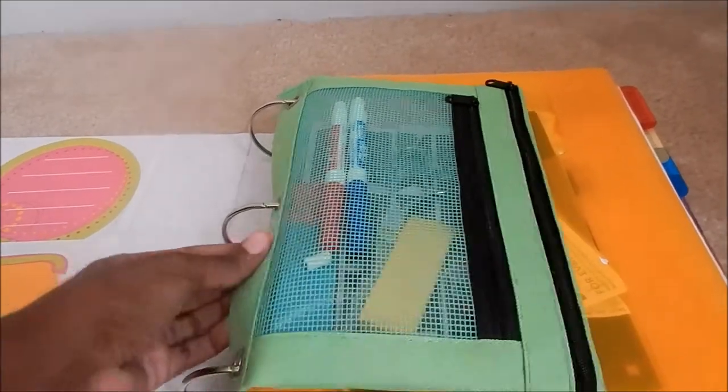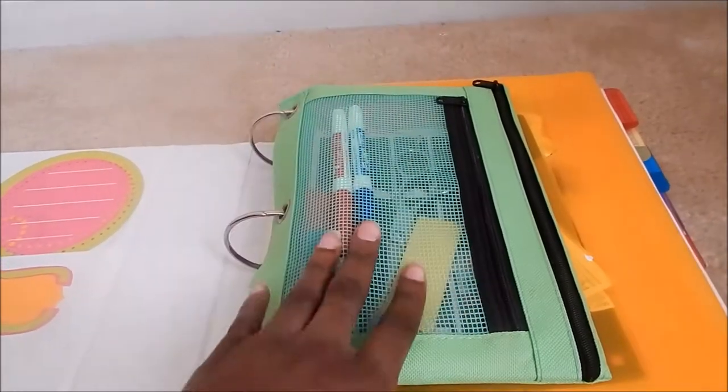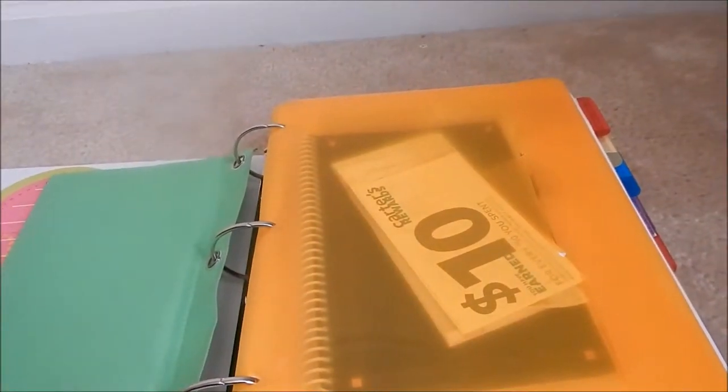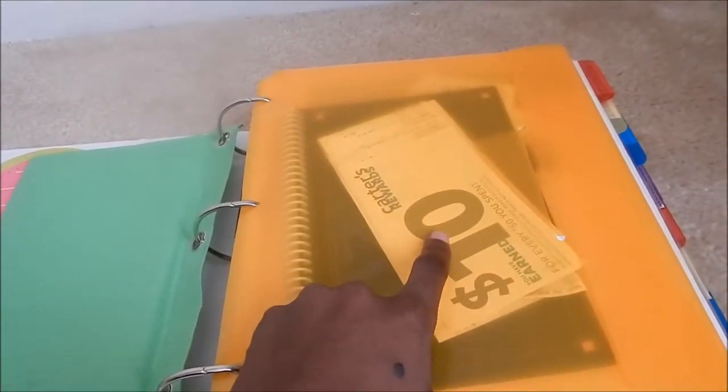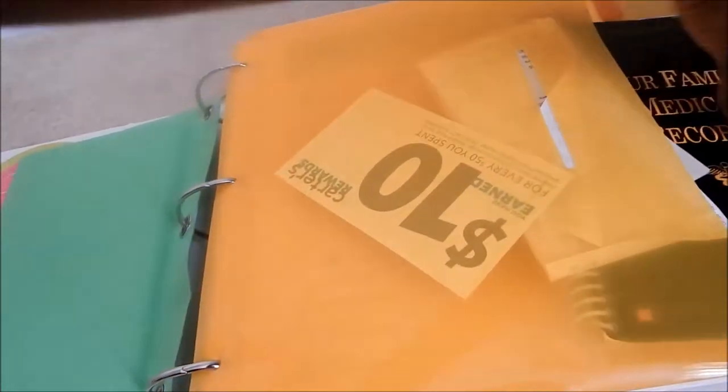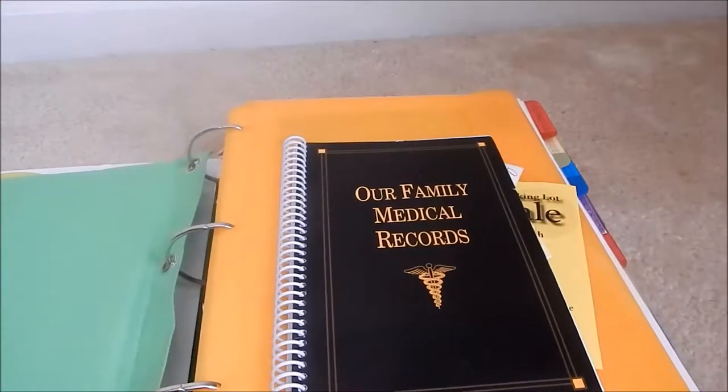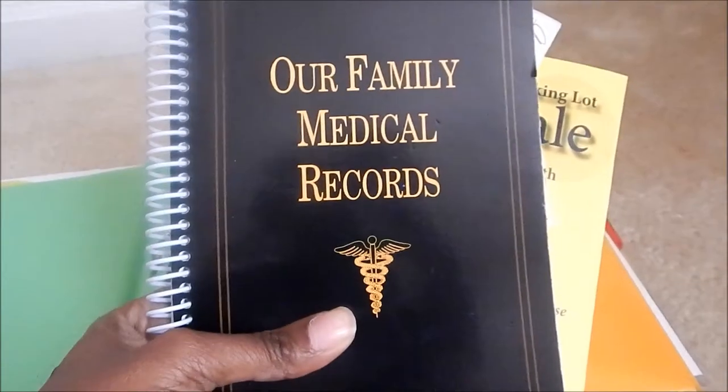Over here we have our pencil case with dry erase markers, stickers, and all that great stuff. In this front pocket are things I want to remember that are coming up soon, like my Carter's $10 reward coupon. I also have my family medical records, which came from Big Lots during the school sales. They were only a dollar.